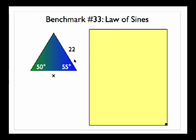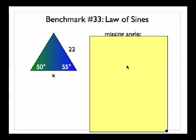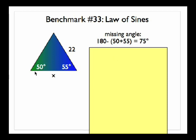The law of sines is used to find the missing side or angle of a non-right triangle. So what I'm going to do in my first step is to find that third angle of 75 degrees, subtracting the 50 and the 55 from 180.